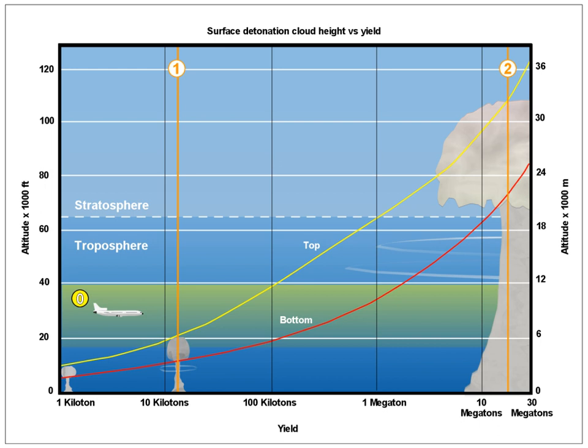The 'kiloton of TNT' is a unit of energy equal to 4.184 TJ. The 'megaton of TNT' is a unit of energy equal to 4.184 PJ. The kiloton and megaton of TNT have traditionally been used to describe the energy output, and hence the destructive power, of a nuclear weapon. The TNT equivalent appears in various nuclear weapon control treaties, and has been used to characterize the energy released in such other highly destructive events as an asteroid impact.